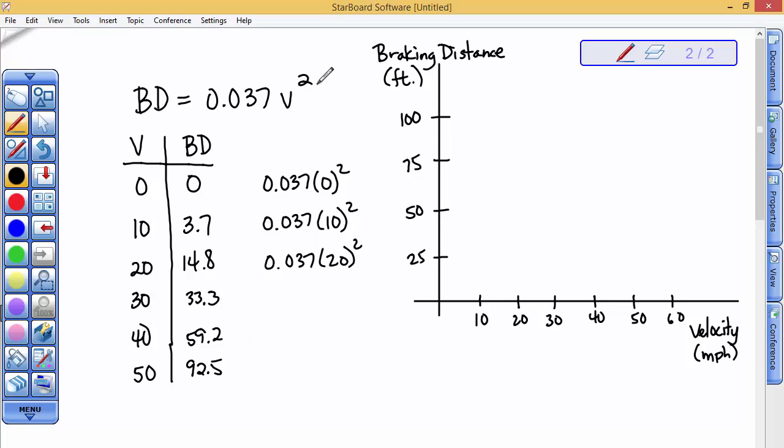So velocity of 0, no braking distance. Velocity is 10, only 3.7 feet to stop. I don't even want that to go off the x-axis much. 20 miles per hour, about 14. So that's about a little bit more than halfway here between 0 and 25.